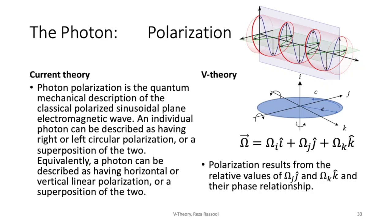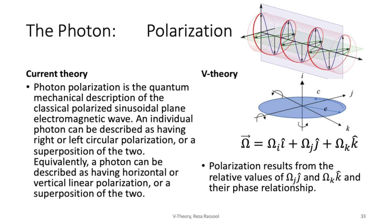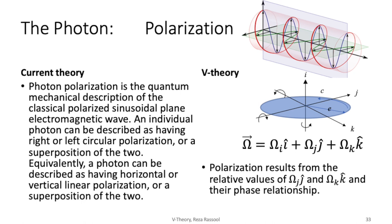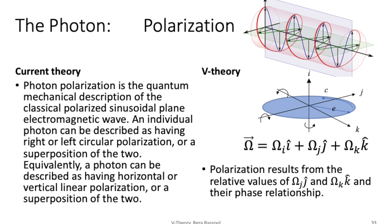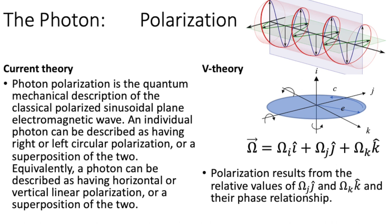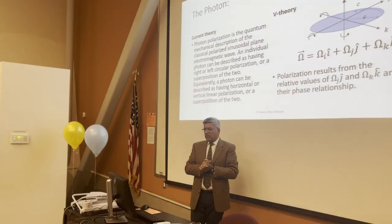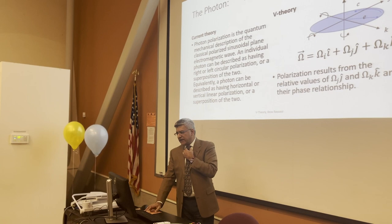I think that v-theory comes up with a more satisfying explanation of polarization. It's in fact to do with the two other components of the spin and polarization results from the relative values of those two other components and their phase relationship. One could be in advance of the other, they could have different amplitudes and so you end up with either plane polarization or circular polarization. Current textbooks don't explain that, they rather explain it in quantum mechanical terms where you've got a superposition of right and left polarization but it leaves me a bit cold and when I can't ask why I smell a rat.